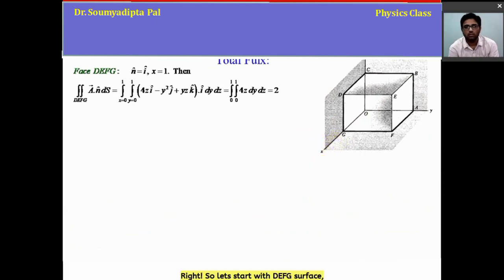Let's start with DEFG surface, which is this front plane. Now the unit normal on this plane will be along the x axis, which is i cap, and here x equal to 1. Then after dot product with A vector, we get this for z.